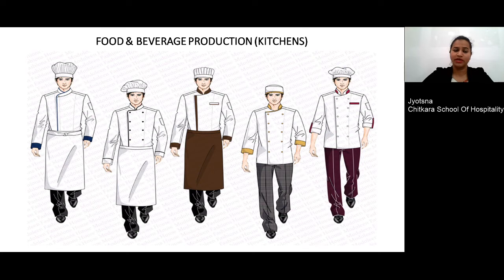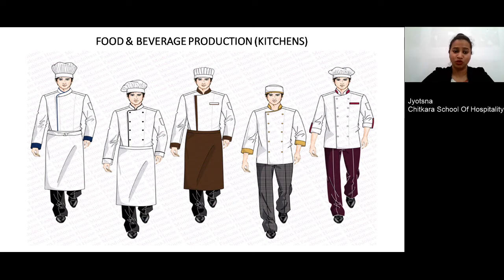The next important department is food and beverage production, which is the kitchen department. This department is responsible for producing dishes, menu items, beverages, and food items. These are basically the chefs, who can be given a chef coat with a trouser, an apron, a chef cap, and a chef tie. Maximum pockets should be provided on the sleeves and in the apron so that chefs can keep extra tools and equipment like spoons or knives.